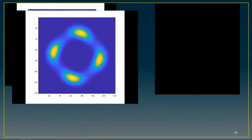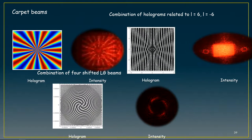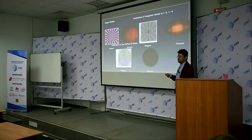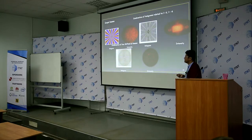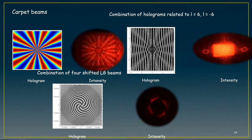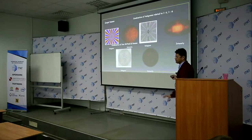These are some simulations — for example in the case of Laguerre-Gaussian modes, we have simulations and also experimental results. This slide shows the superposition of four shifted Laguerre-Gaussian beams, which Professor Kotlyar and Khonina published in Physical Review A. We superposed four of these beams, and this is the interference pattern from the superposition. These types of beams may be useful for trapping small nanoparticles.